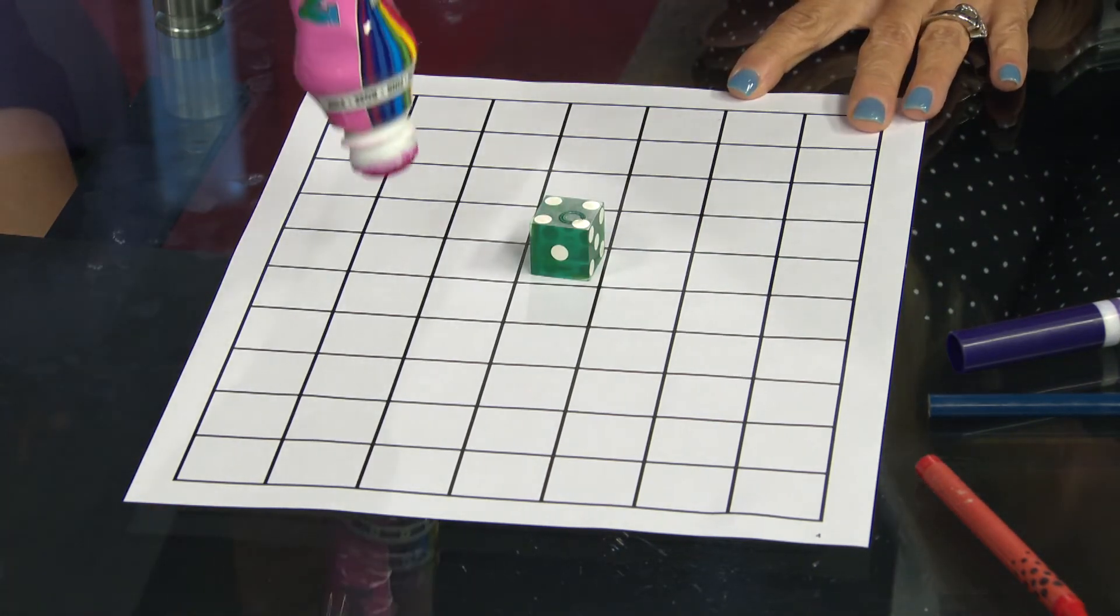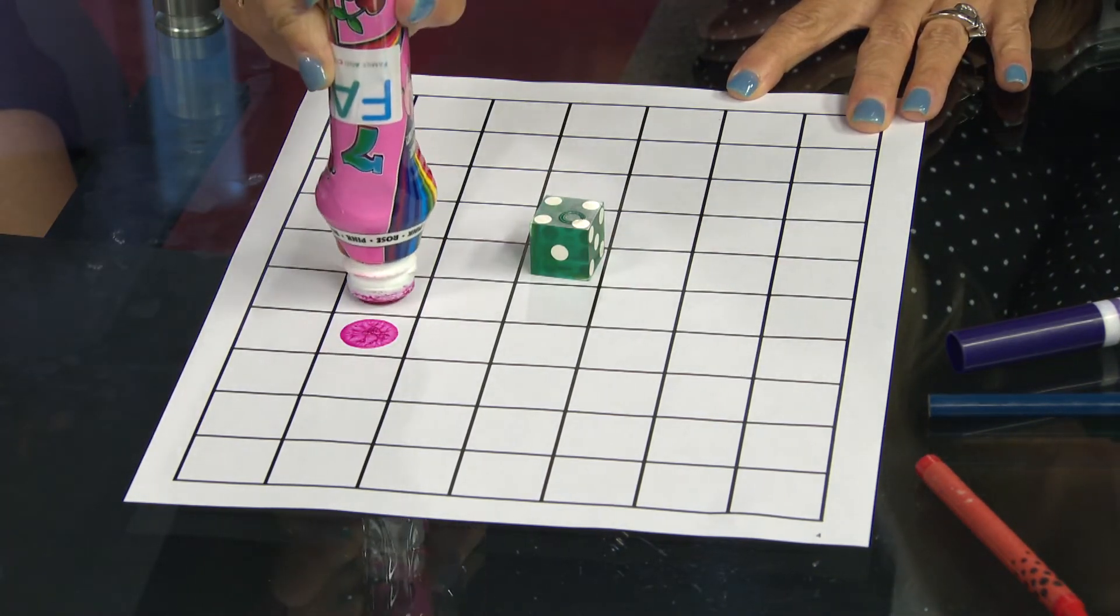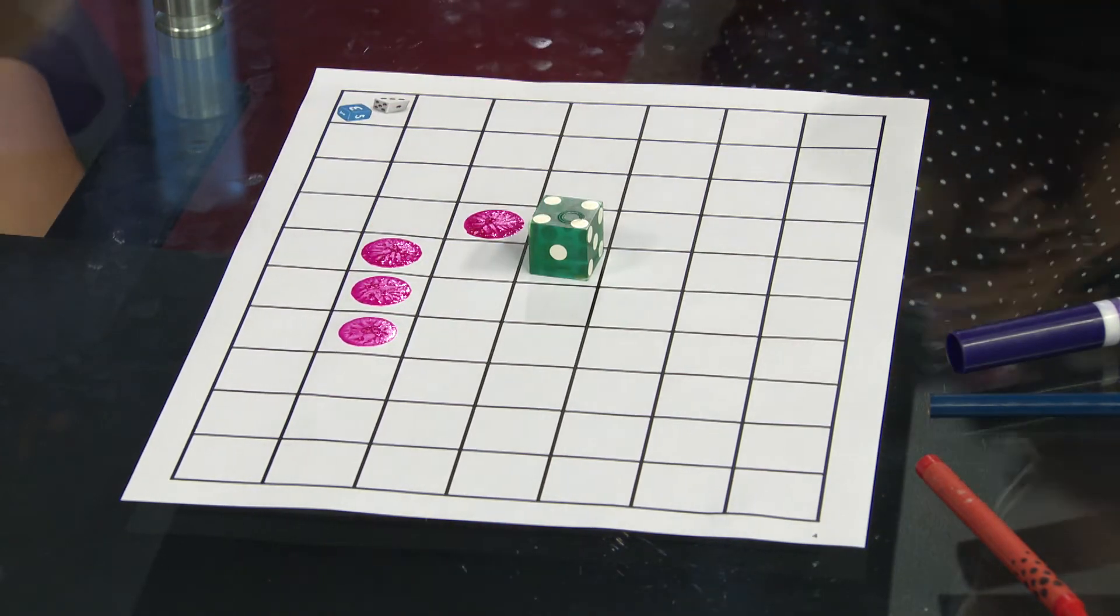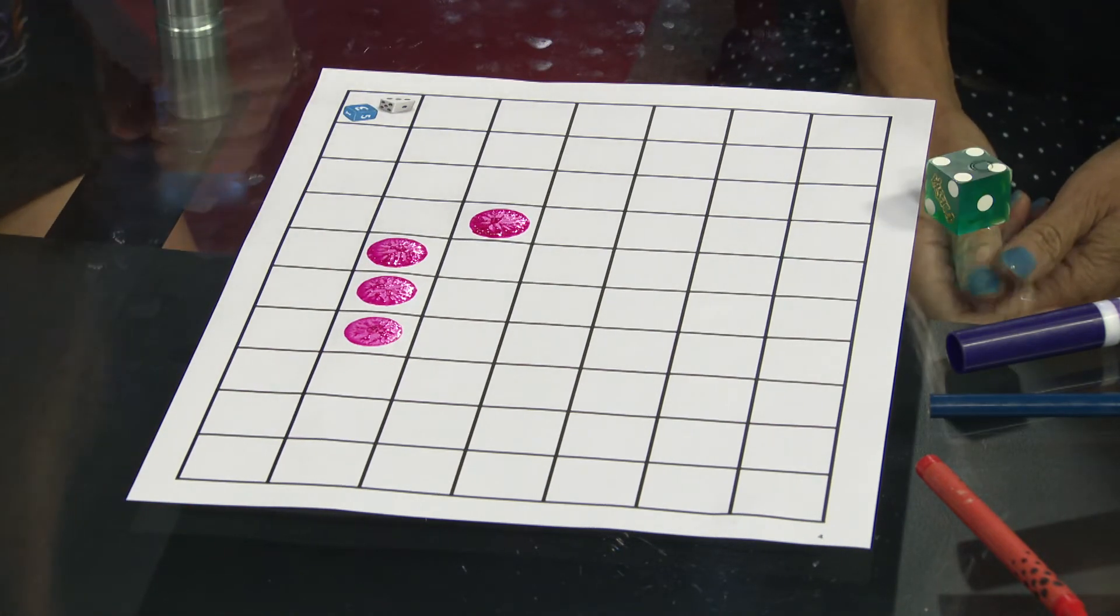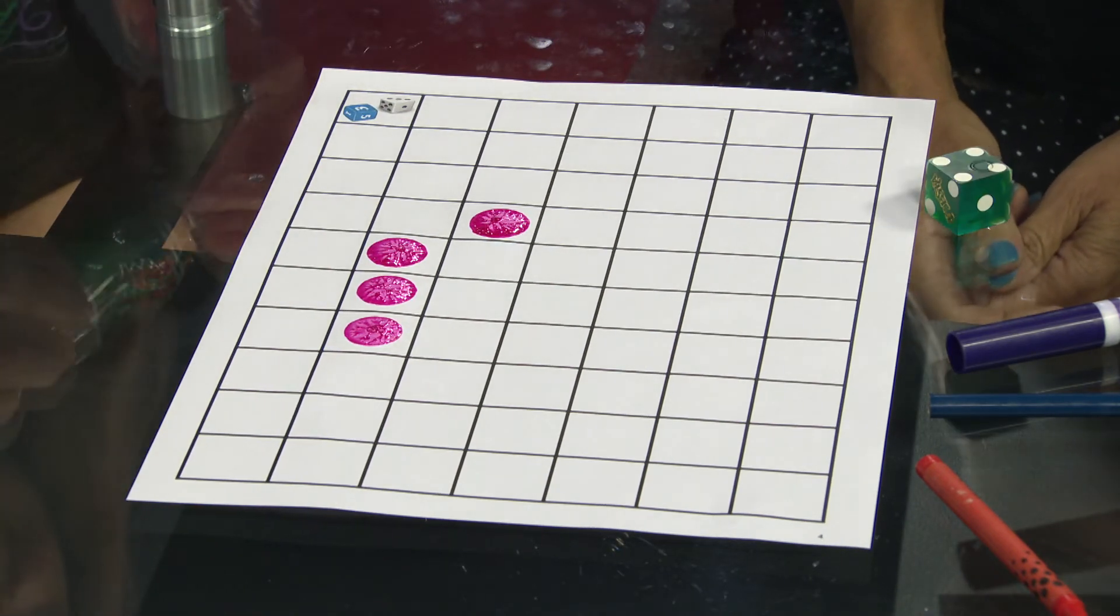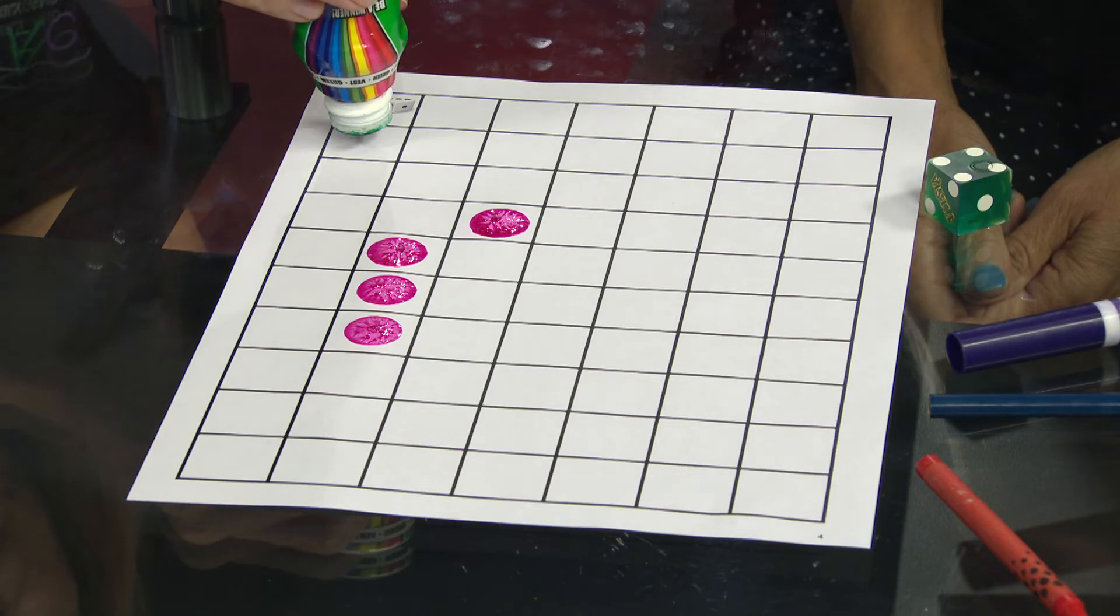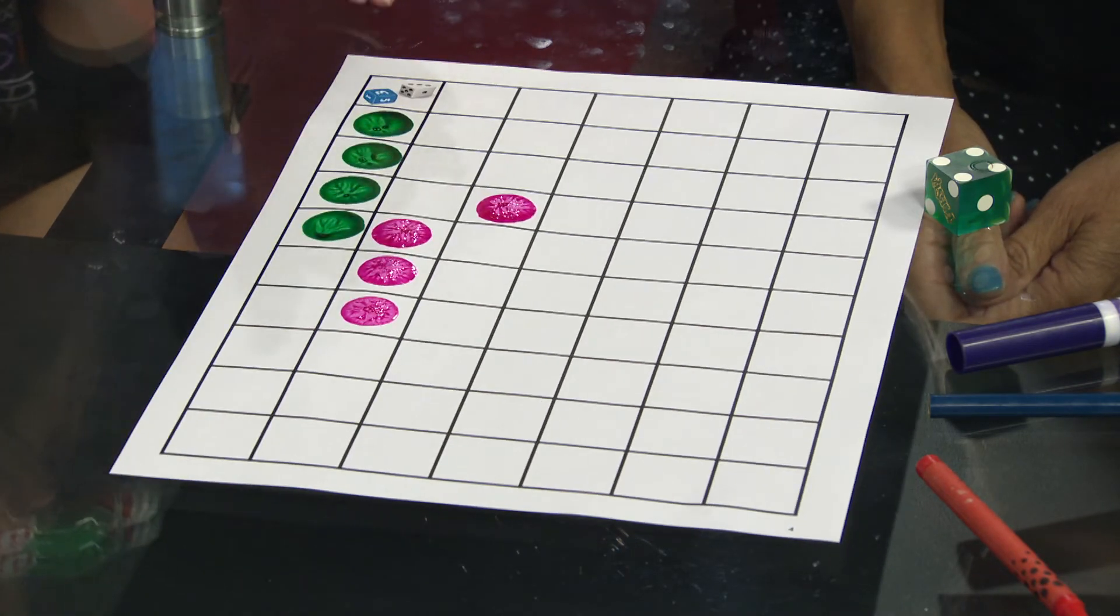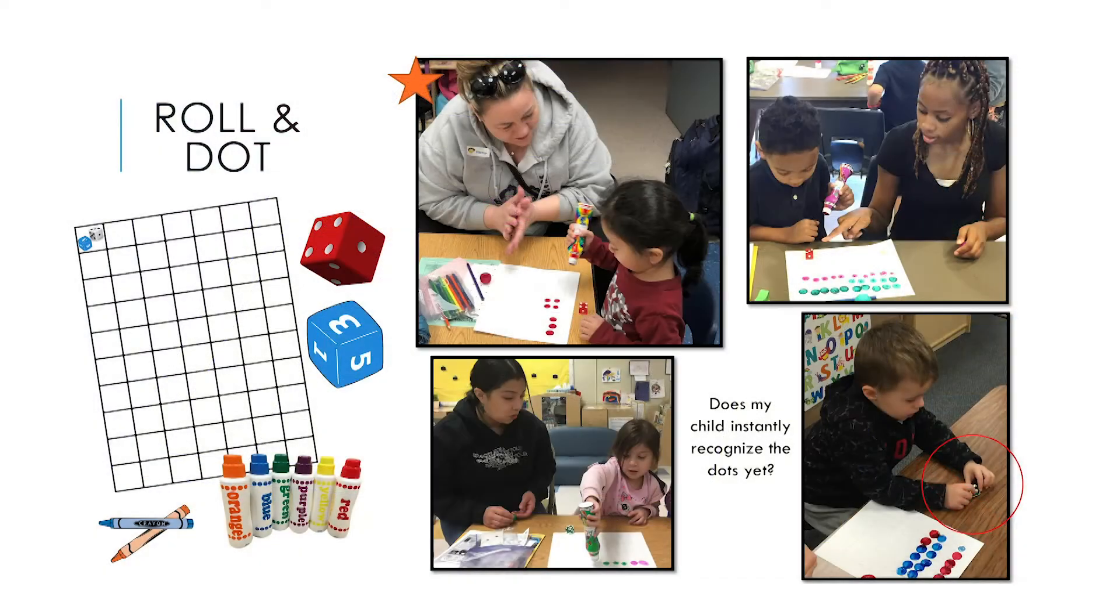Take turns rolling the die. Color the number of squares, or use a blank piece of paper and match the amount that you rolled on the die. Remember, if your child needs to touch each dot on the die to recognize the amount, that's okay. No rushing or shortcuts. It's an ideal way to know that you need to give more time for more practice.